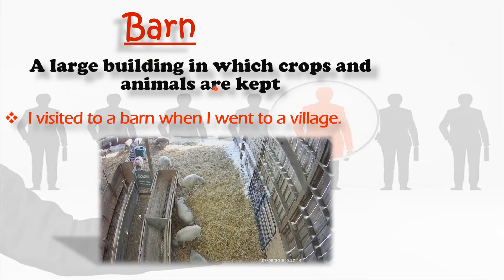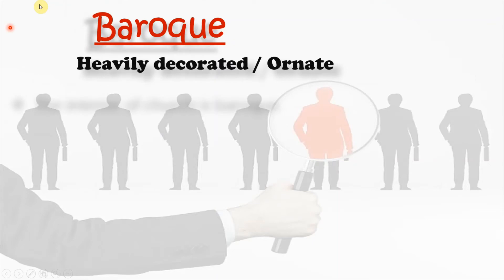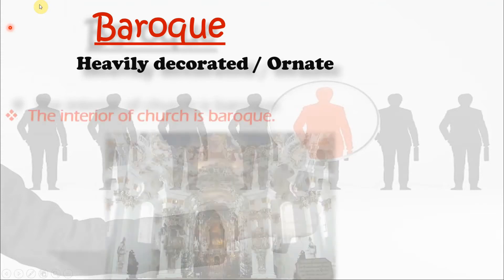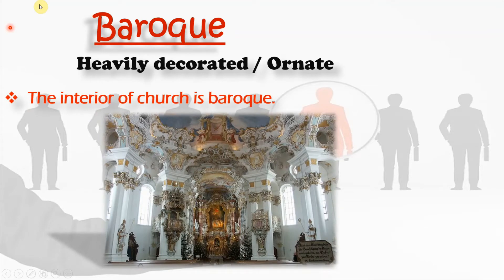The next word is baroque, which means heavily decorated or ornate. If you want to use another word, you can say florid. The sentence: 'The interior of the church is baroque,' meaning the interior is well decorated. Just look at this picture — it's a baroque church, a highly decorated church.